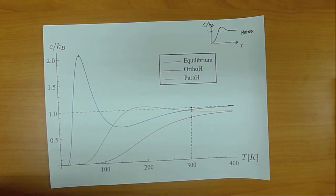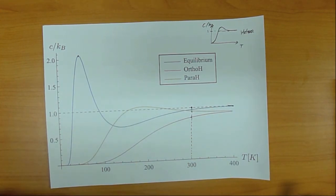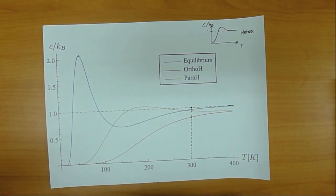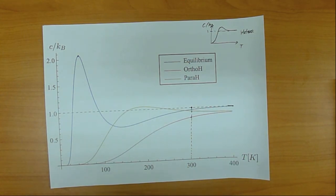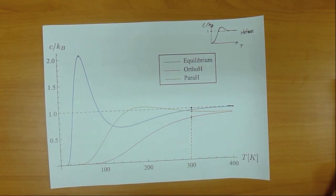To summarize: if the two nuclei are the same, the wave function must have the correct symmetry under swapping the positions of the particles. This implies restrictions on what the wave function can look like, which in turn restricts the possible values of L. For nuclei with non-zero spin, like hydrogen, these restrictions can depend upon the nuclear spin state of the molecule.